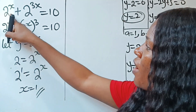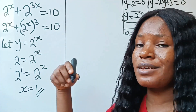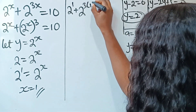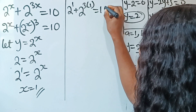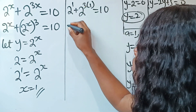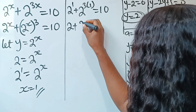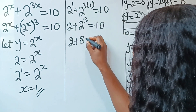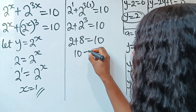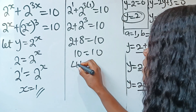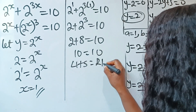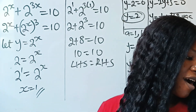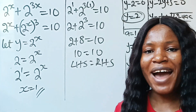Let's substitute x equals 1 to verify. We have 2 to the power of 1 plus 2 to the power of 3 times 1 equals 10. That's 2 to the power of 1 is 2, and 2 to the power of 3 is 8, so 2 plus 8 equals 10, and 10 equals 10. The left-hand side equals the right-hand side, confirming our solution is correct. Thank you so much for watching!